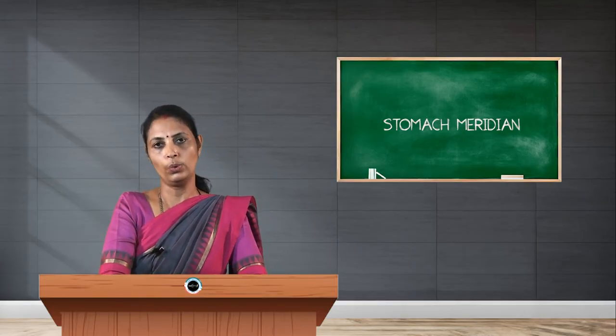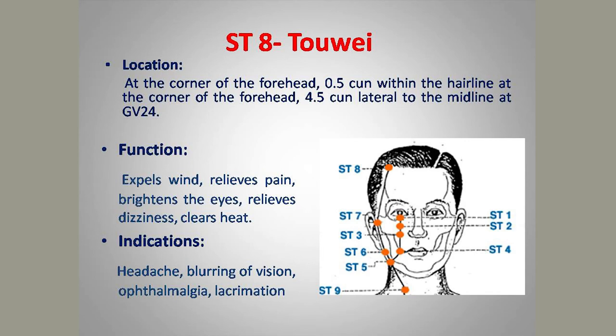Stomach 8, Touwei, is located on the forehead, 0.5 cun inside the natural hairline at the angle of the forehead, 0.5 cun lateral to the natural hairline. It is a specific point for paralysis of the eye muscles. Its main function is to remove excess wind, brighten eye vision, relieve dizziness, and clear heat. Indications include headache, blurring vision, pain in the eyes, and excessive tearing.